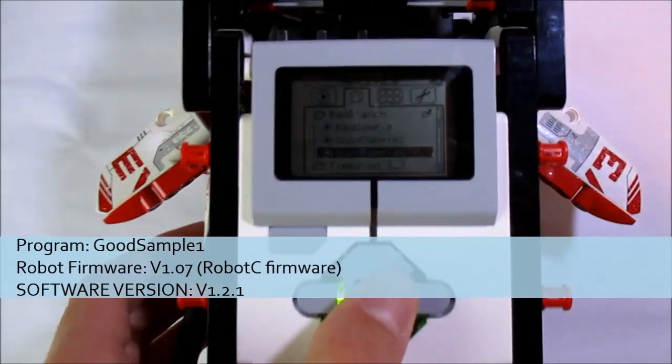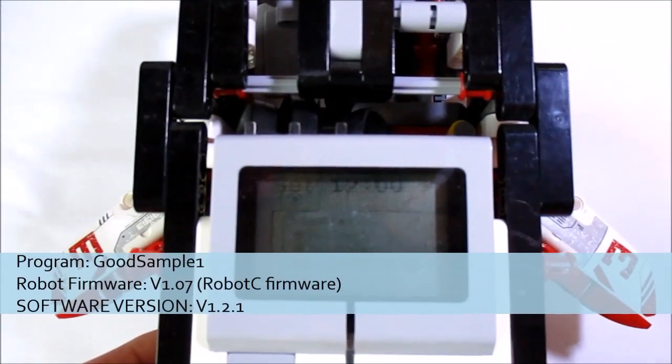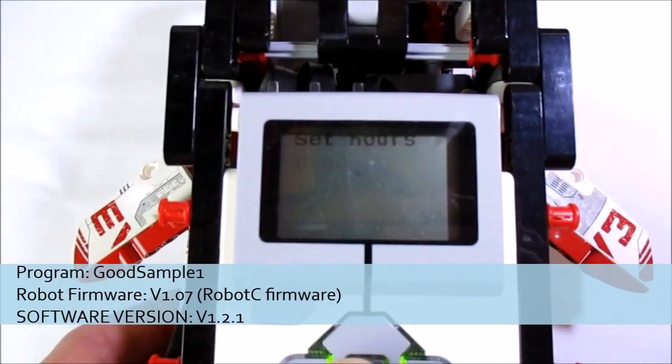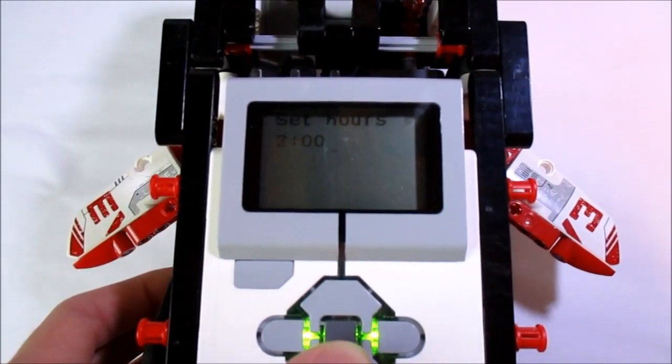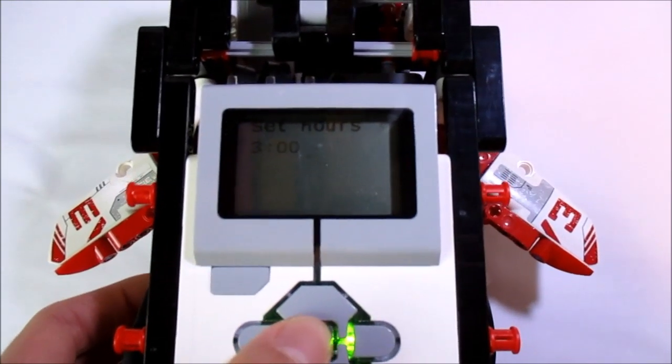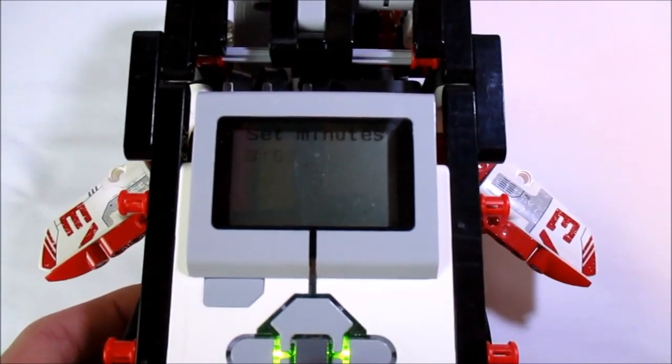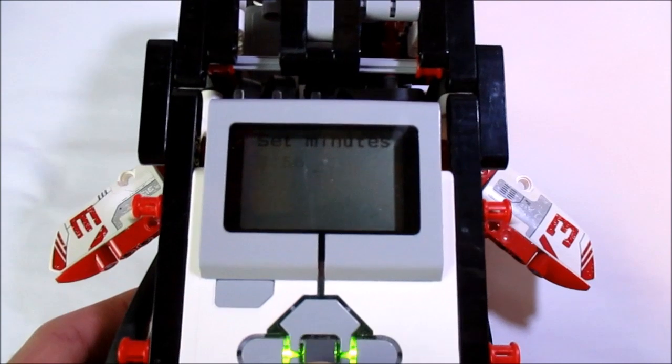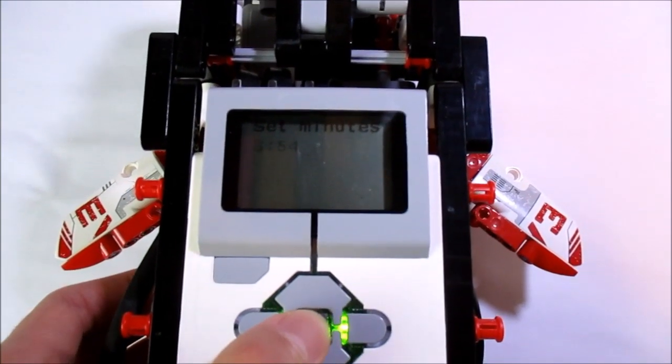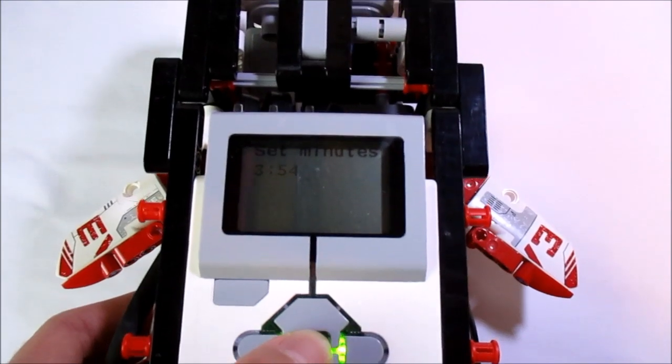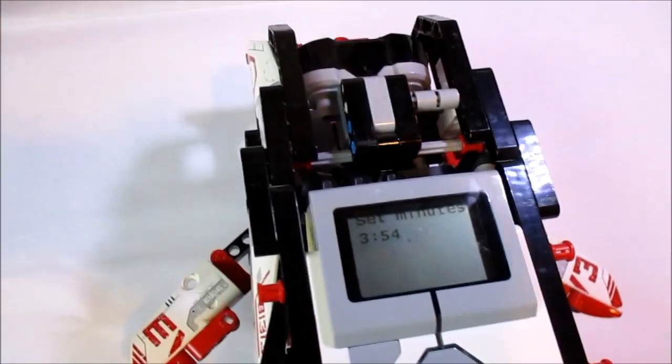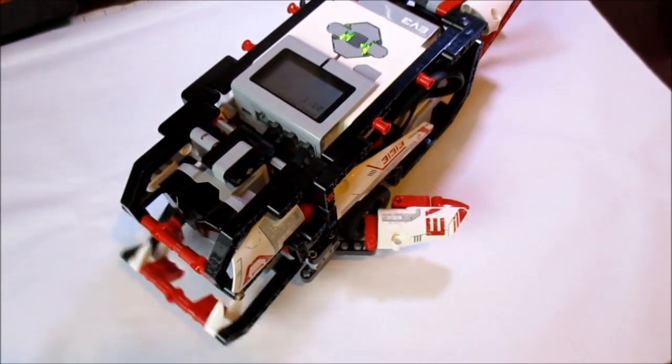First, I'd like to run the GoodSample program using the old version of the software. This is the one that I said is going to work, and we see that it does. When I open up the program, it allows us to enter in a desired time using the brick buttons in hours and minutes. After you've entered in your desired time, you click the middle button again, and it's going to run the motor for a time that's proportional to the time that you've entered.